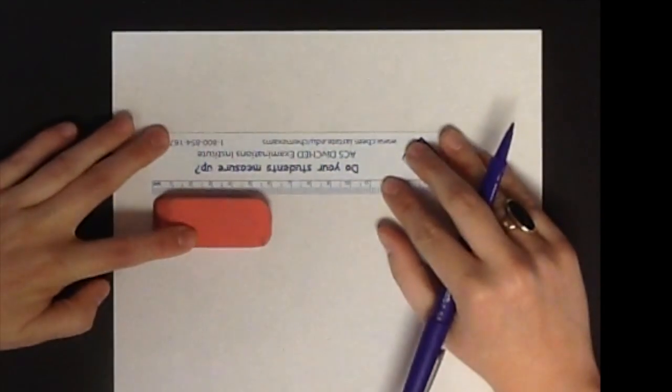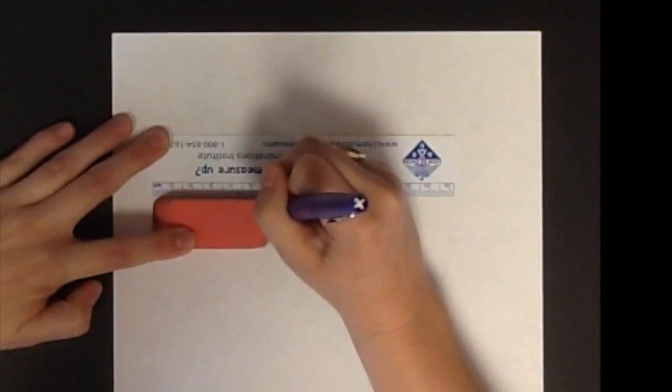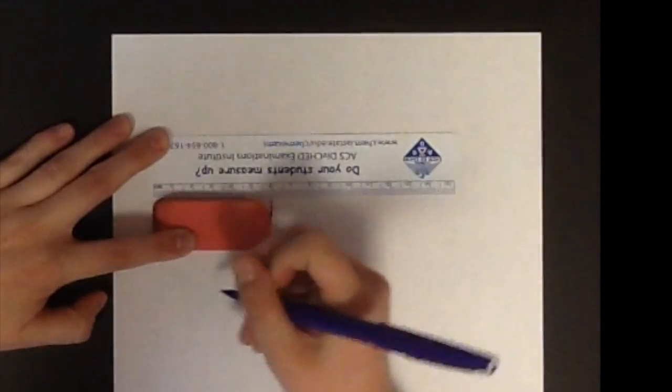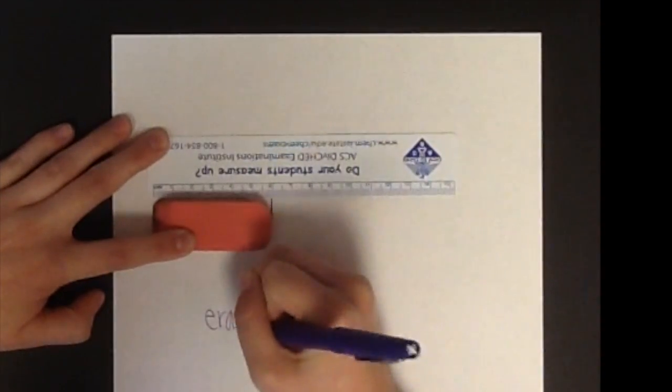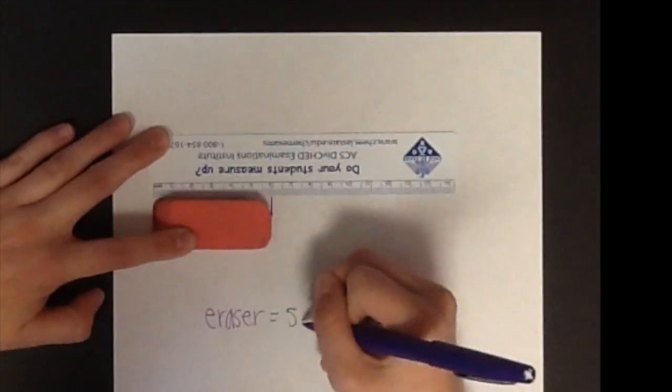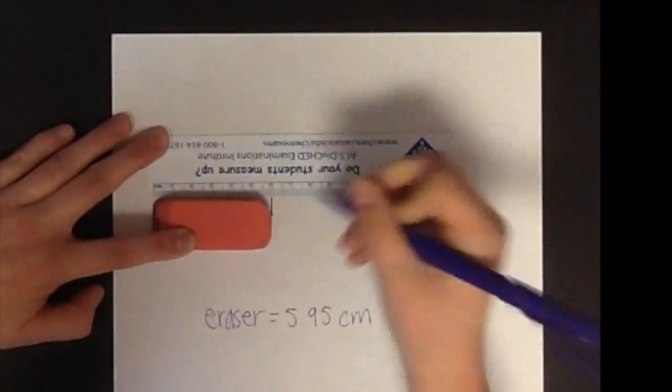Let's measure this eraser. We will be measuring in centimeters, which means that the proper way to record centimeters is to two decimal places because rulers have a 0.1 centimeter least count, so you have to estimate the last digit. The eraser is estimated to be 5.95 centimeters, giving it a total of three significant digits.